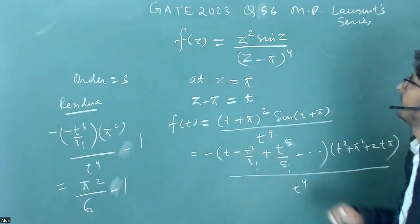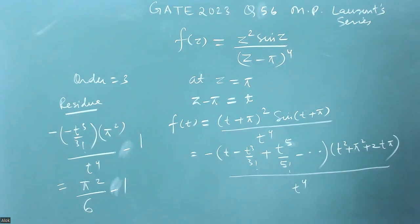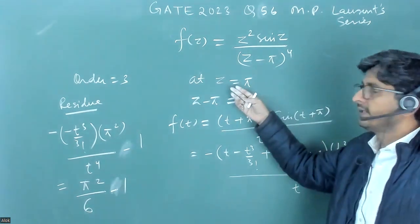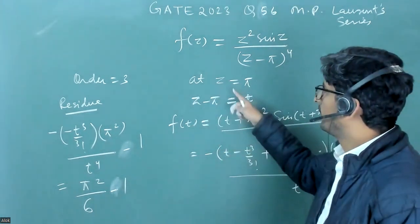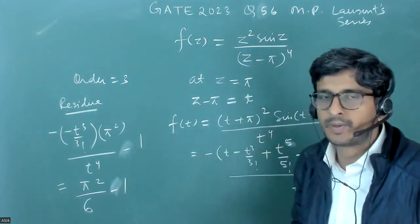This is question number 56 of mathematical physics. It is based on Laurent series. They have given a function and asked which of the following options is correct at z equals pi.